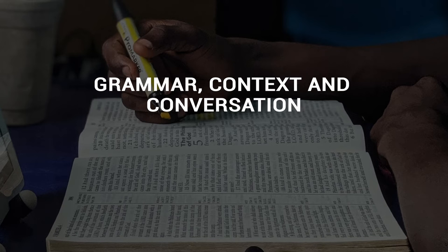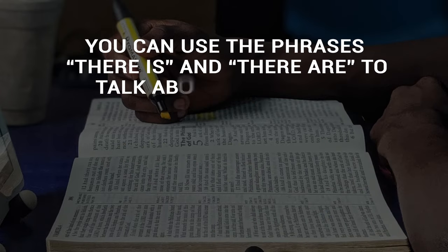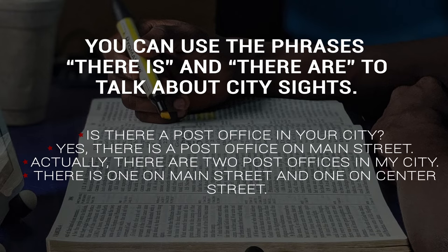Grammar, context and conversation. Now that you have learned and practiced the vocabulary, it's time to put the words into sentences. You can use the phrases there is and there are to talk about city sites. Is there a post office in your city? Yes, there is a post office on Main Street. Actually, there are two post offices in my city — there is one on Main Street and one on Center Street.